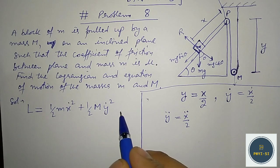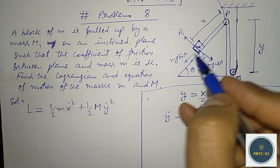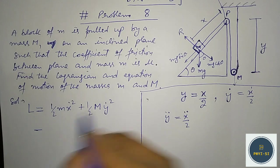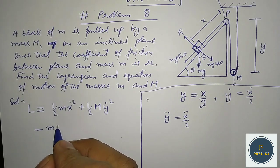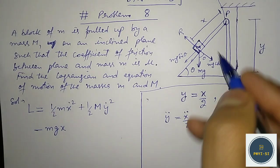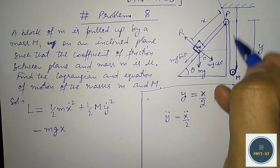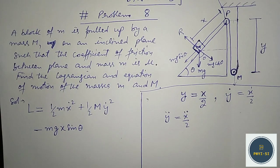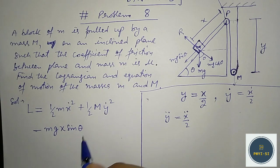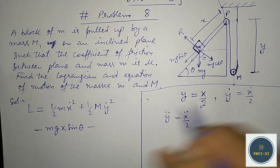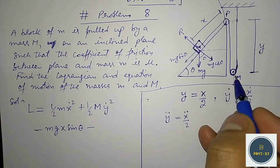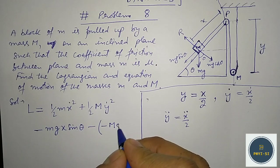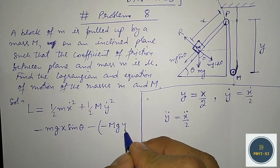This is the required kinetic energy. Now for the potential energy: the small mass m is moving upwards so it gains potential energy, which is positive and given by mg times x sin theta. The larger mass M is going downwards, so its potential energy will be minus Mg times y.